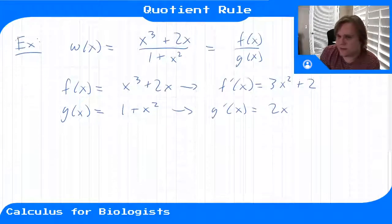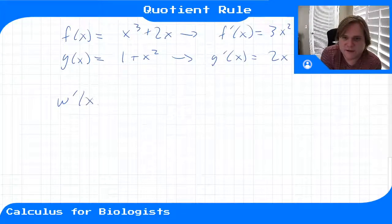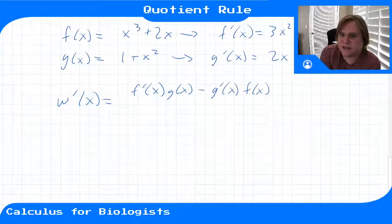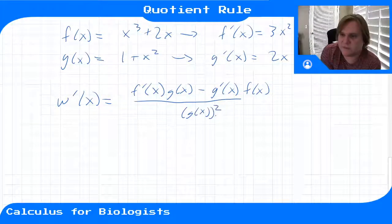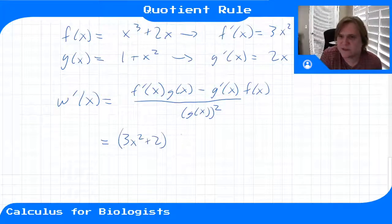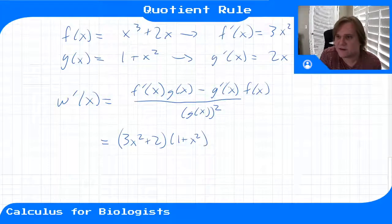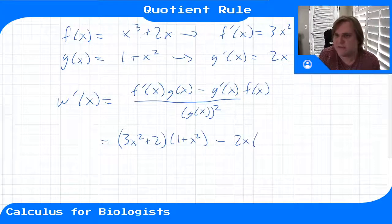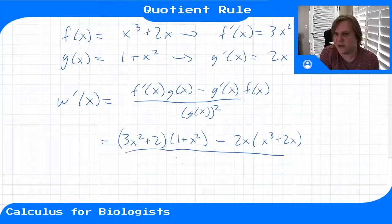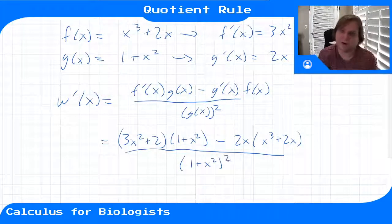Now we apply the quotient rule: w prime of x equals f prime times g minus g prime times f, low d high minus high d low, all over g of x squared. Plugging in, the numerator is three x squared plus two times one plus x squared, minus two x times x cubed plus two x, all divided by one plus x squared squared.